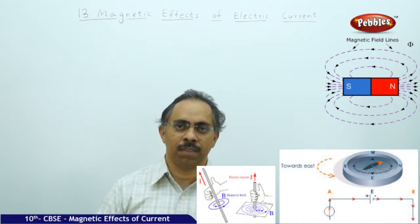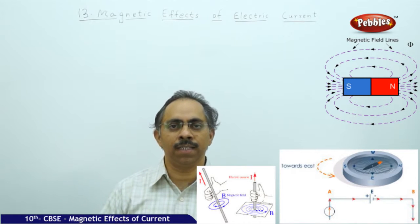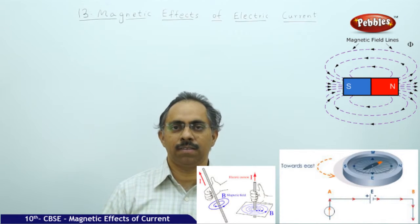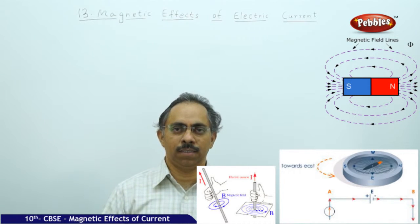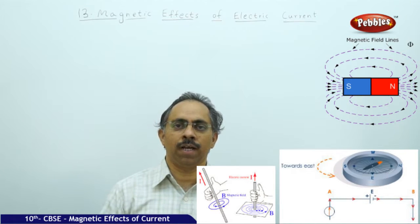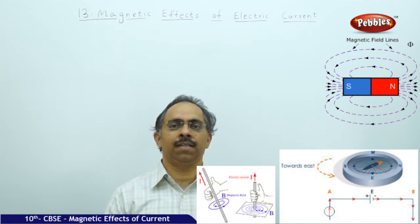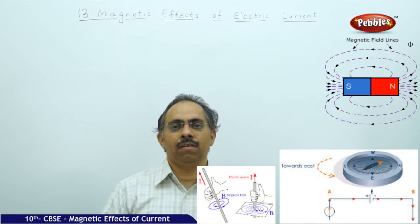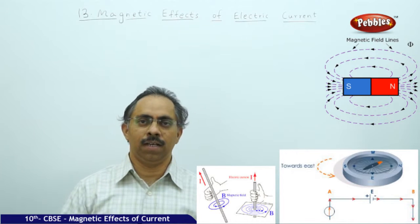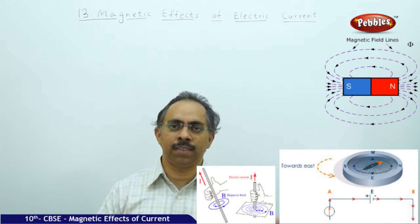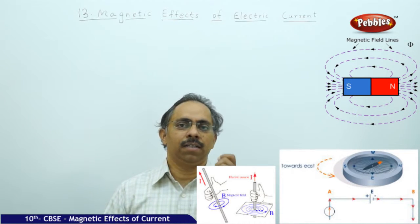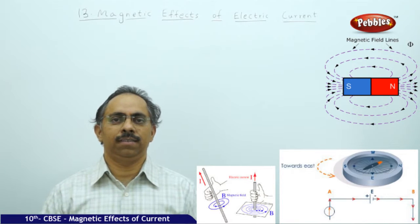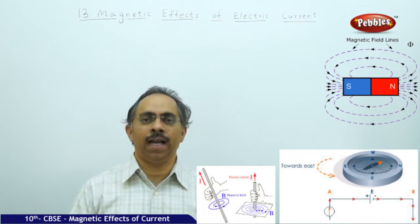We need the help of some other device to show visually whether there is electric current in the wire or not. You can take an ammeter and connect it in series to the wire, so that when current passes through the wire the same current passes through the ammeter. If the ammeter shows some deflection, you can say there is some current in the wire. But you can't catch hold of the wire with your naked hand to check — if current is there it will pass through your body, so it's a risky job.